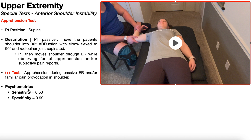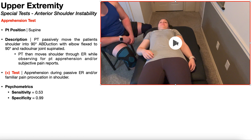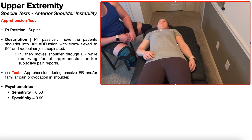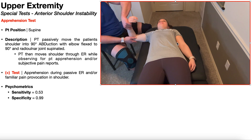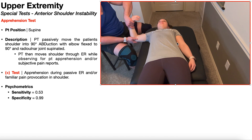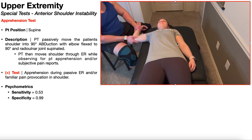As a standalone test, the sensitivity is only 53%, so it is not good by itself for ruling out anterior shoulder instability. However, it has a very good specificity of 99% according to one study. To recap: take the patient's shoulder into 90 degrees of abduction, elbow flexed to 90 degrees, forearm supinated, then passively move through external rotation and monitor for apprehension and subjective pain reports.